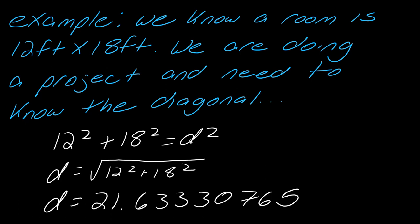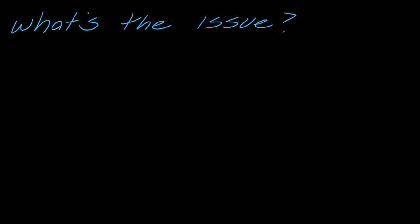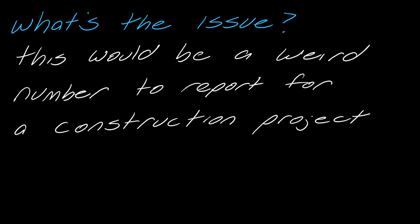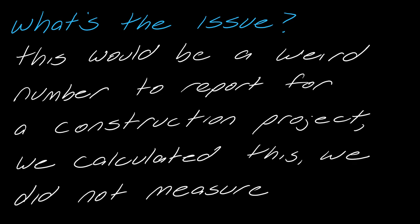If I calculate this, I get this crazy decimal. You would not give this number for a construction project - you'd probably round it to like 22 feet. The issue is that we calculated this number, we did not actually go out and measure the diagonal. When we just calculate in that instance, that is the definition of this exact number.